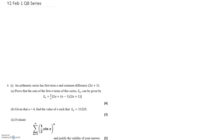Question 8 is on series — I'll need a bit of room. It looks like an awkward proof type question. We're told the sequence is arithmetic, so it goes up or down the same amount each time. The first term is a, and the common difference is 2a plus 1.